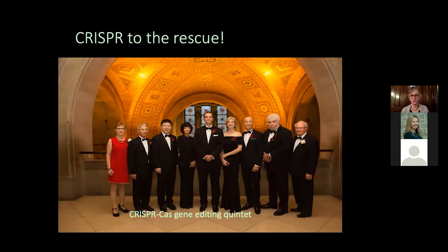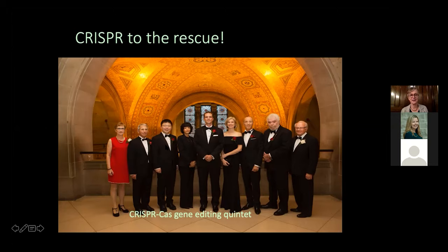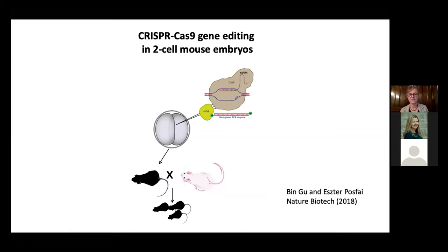CRISPR has changed everything we do in terms of mouse genetics. All the work done over the years in gene targeting in ES cells was not a complete waste of time, but CRISPR, which we can do directly in embryos, has made it so much faster and more efficient. As president of the Gairdner Foundation, it was my privilege to recognize at the Gala in 2016 what I call the CRISPR quintet — Feng Zhang, Emmanuel Charpentier, Jennifer Doudna, Rodolphe Barrangou, and Philippe Horvath — along with others including Tony Fauci and Frank Plummer. Jennifer and Emmanuel have just won the Nobel Prize this week.